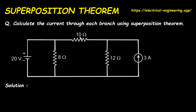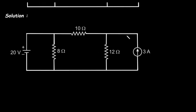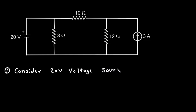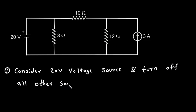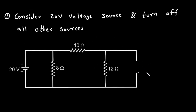For this circuit, we have to find the current through each branch. Step number one is to consider the 20V voltage source and turn off all other sources. When we turn off the current source, it will be replaced by an open circuit. So let's replace this current source by open circuit.